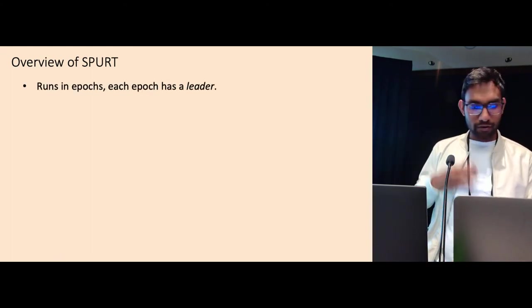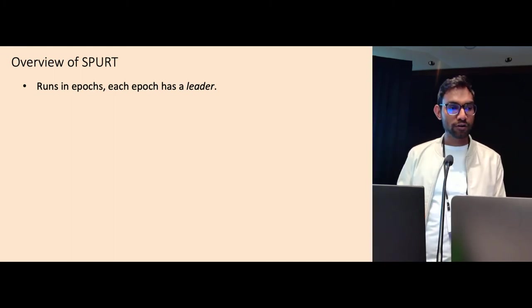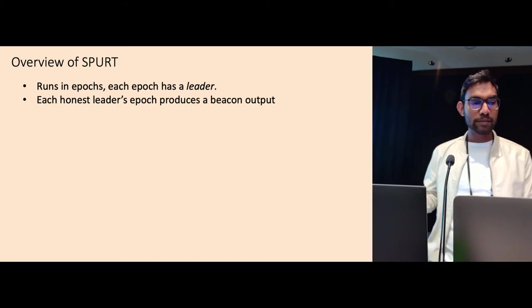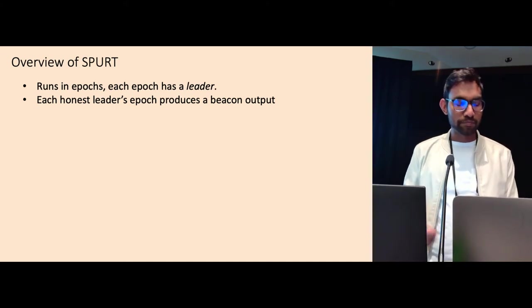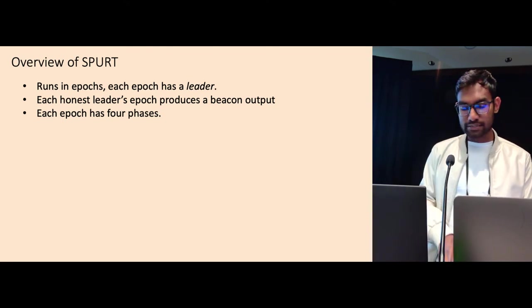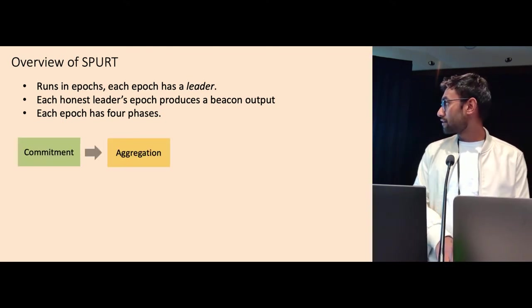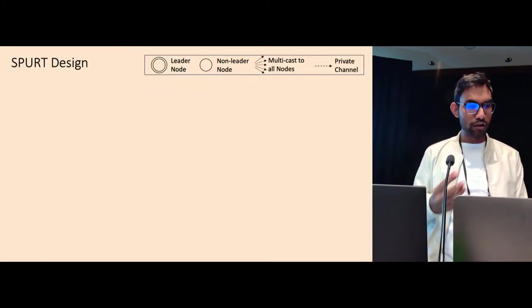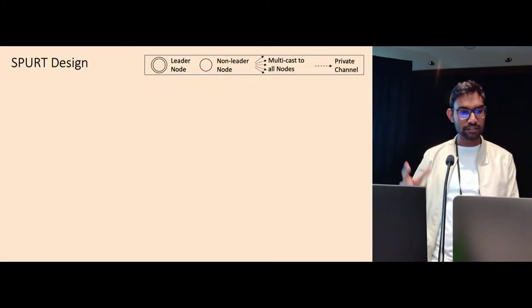Let's look at how we construct our protocol. As in SMR, we also run in epochs. Every epoch has a leader, and we ensure that when the epoch's leader is honest, we produce a beacon output. Each of our epoch has four phases. Commitment phase, aggregation phase, agreement phase, and reconstruction phase. I'll now briefly look at all of these phases.